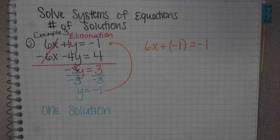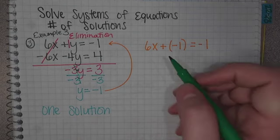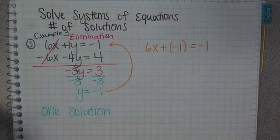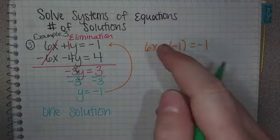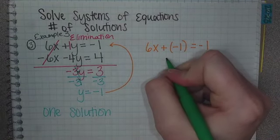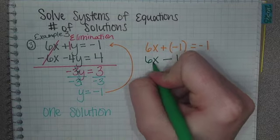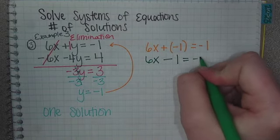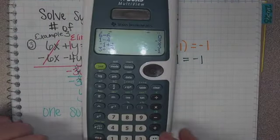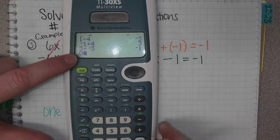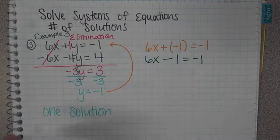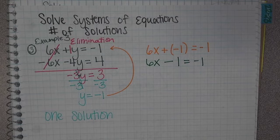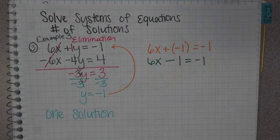y equals negative 1. You're going to take out the y and put negative 1. We're going to do 6x plus, instead of y, write negative 1 equals negative 1. Now we have 6x plus negative 1. Adding a negative, if you think about this, it's the same thing as subtracting. I'm going to rewrite that to 6x minus 1. Adding a negative is the same thing as subtracting. I think on the last test, that's where quite a few of you guys messed up.